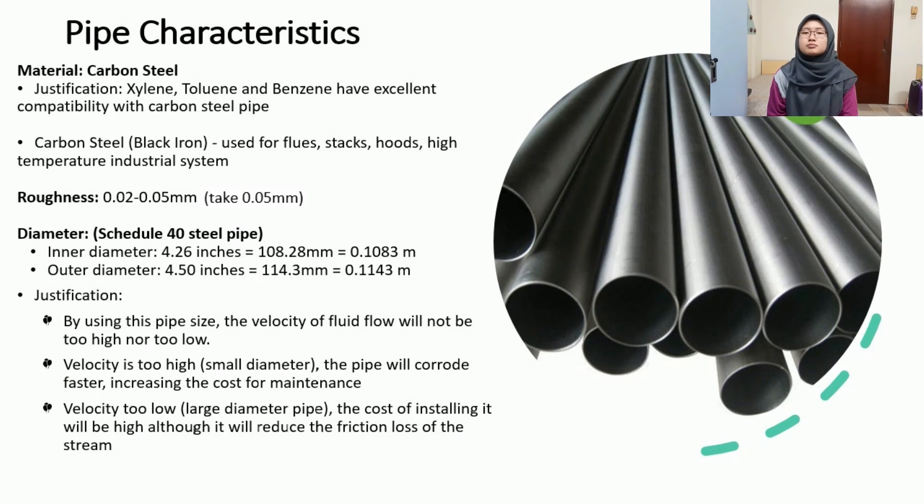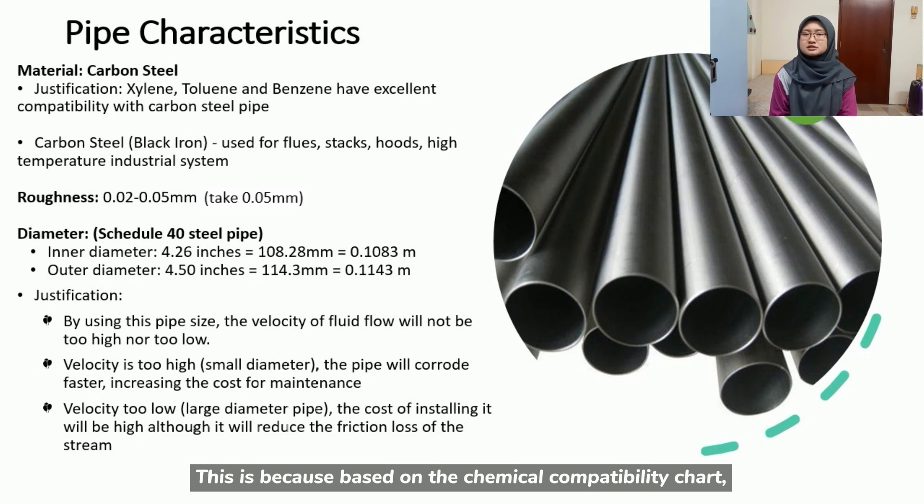Moving on to the characteristics of pipe, material chosen is carbon steel. This is because based on the chemical compatibility chart, xylene, toluene and benzene have excellent compatibility with carbon steel pipe which means they don't react.